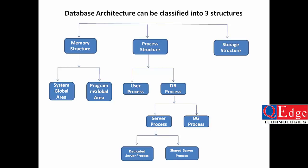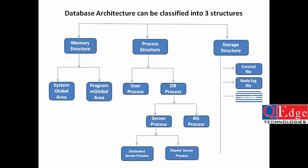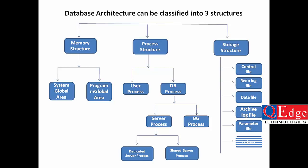After understanding the process structure, we will enter the storage structure — the physical structure. You will find physical files like control file, redo log file, data files, archived redo log file, parameter file, and others. So Oracle database architecture has three structures: memory structure, process structure, and storage structure.